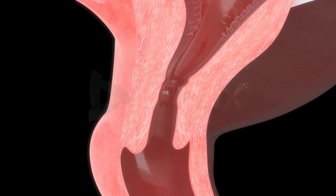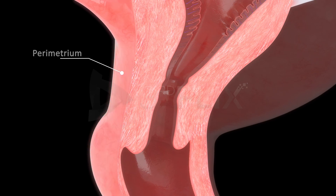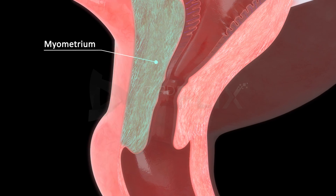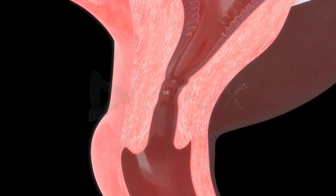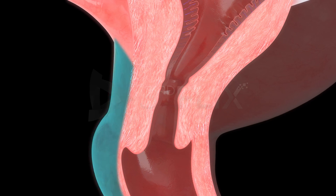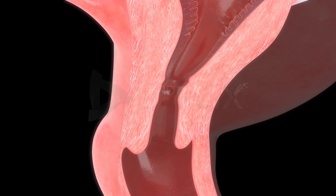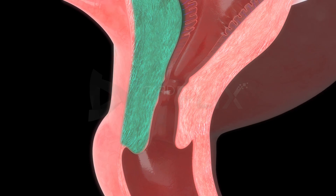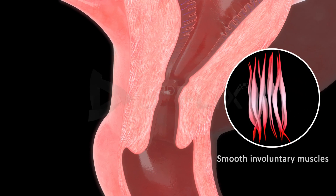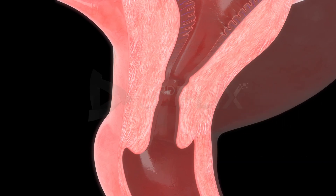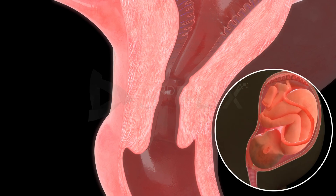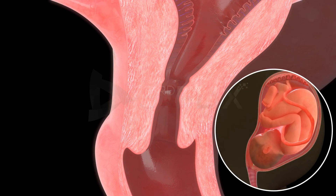The wall of the uterus has three layers: the perimetrium, myometrium, and endometrium. The perimetrium is the thin external membrane. The myometrium is the thick middle layer, made up of smooth involuntary muscles. The contraction of the uterine muscles aids in childbirth.